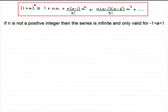Hi. Welcome to this tutorial on the validity of the binomial expansion. If n is not a positive integer, then the expansion is only valid for values of a between minus 1 and 1, and the series also is infinite.